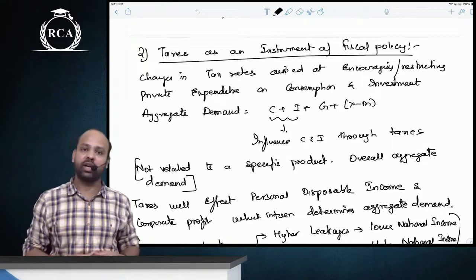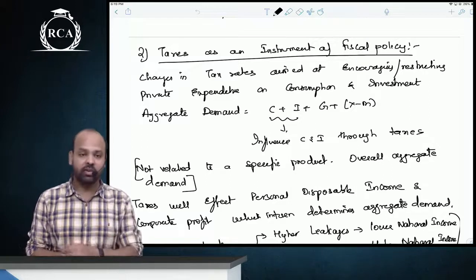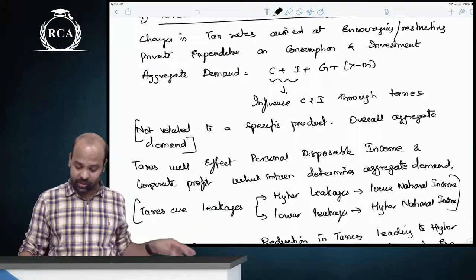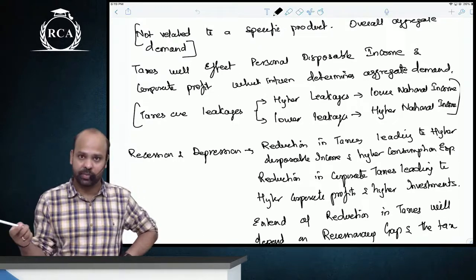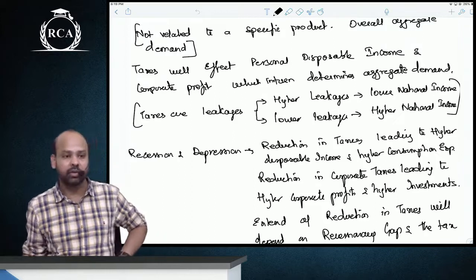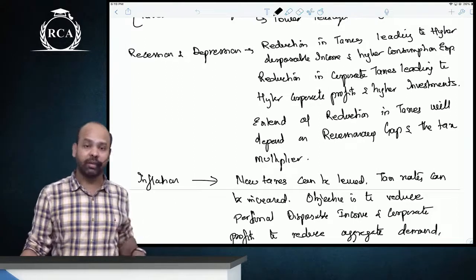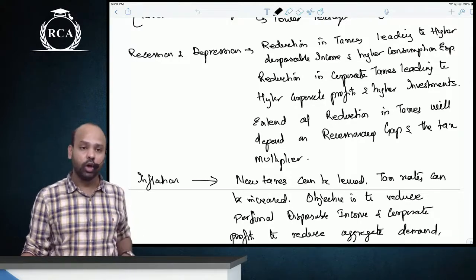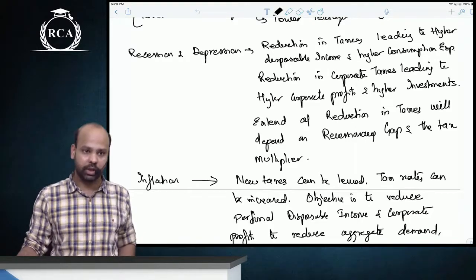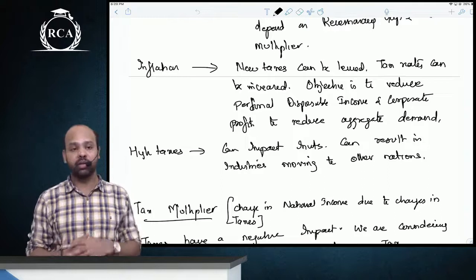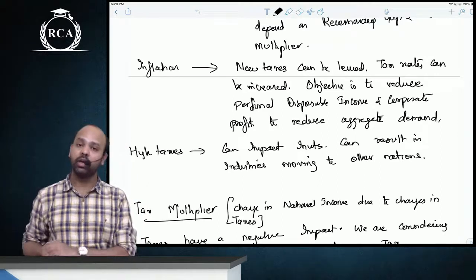Using taxes as an instrument of fiscal policy involves changing tax rates to encourage people to consume more or restrict their expenditure. Taxes can influence both consumption expenditure and investment expenditure. Taxes affect personal disposable income, which affects consumption expenditure; corporate taxes affect corporate profits, which affect aggregate demand. During recession, the government can reduce personal income taxes and corporate taxes to increase disposable income and corporate profits, raising aggregate demand. During inflation, the government can levy new taxes or increase tax rates to reduce personal disposable income and aggregate spending.